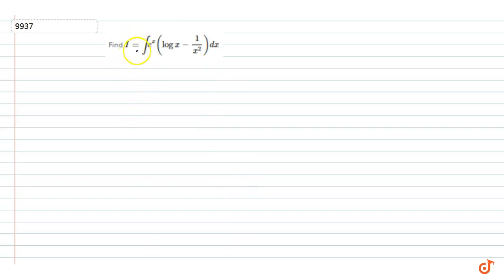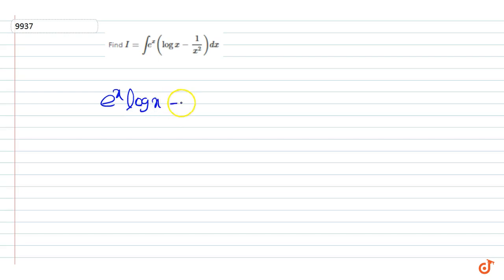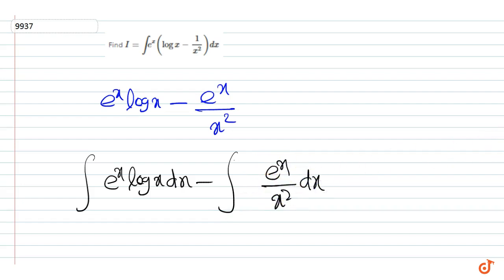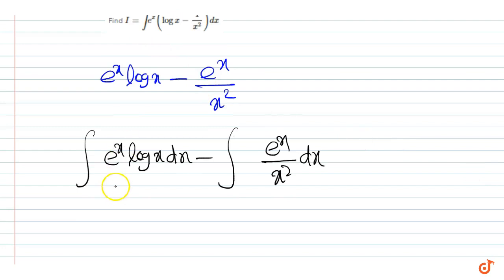In this question we have to find the indefinite integral of e to the power x into log x minus 1 by x squared, dx. The integrand is e to the power x log x minus e to the power x by x squared. Integrating, we split this into: integral of e to the power x into log x dx minus integral of e to the power x upon x squared dx. We then apply integration by parts.